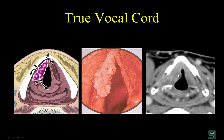In this case, the true vocal cord carcinoma extends anteriorly to the anterior commissure — the most anterior point at the level of the true vocal cord. Conversely, posteriorly is the posterior commissure. So here's a true vocal cord carcinoma extending from the cricoarytenoid joint anteriorly all the way to the anterior commissure.